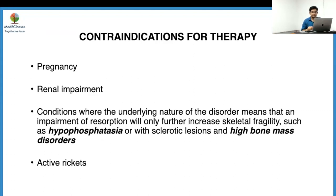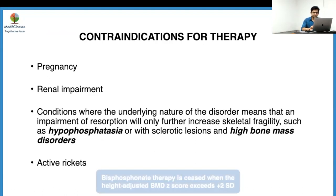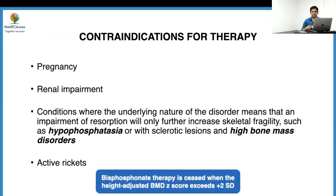Contraindications to bisphosphonate therapy include pregnancy, renal impairment, and conditions associated with increased bone mass such as osteopetrosis or hyperphosphatasia, where these drugs would cause more harm. Active rickets is also a contraindication. Bisphosphonate therapy should be stopped if the BMD SDS score rises above +2, which is the indication for stopping treatment.